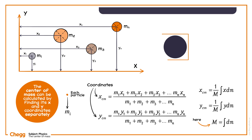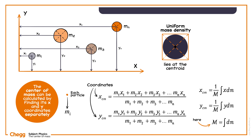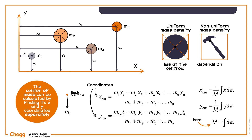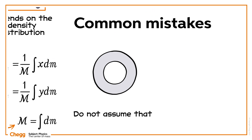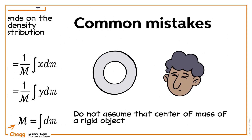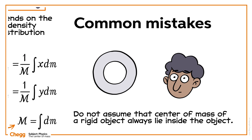Due to symmetry, the centre of mass of rigid bodies having uniform mass density lies at the centroid of the body. In case of objects with non-uniform mass density, the centre of mass depends on the density distribution. Do not assume that the centre of mass of a rigid object always lies inside the object — for instance, in the case of a ring, the centre of mass lies at its geometric centre, where there is no real mass distribution.